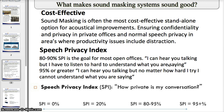Sound masking is often the most effective stand-alone option for acoustical improvements. If you already have drop ceilings and cubicle partitions and are still having speech privacy issues, sound masking is the cost-effective way to definitely increase your speech privacy to a level of confidentiality. The Speech Privacy Index is what acousticians at Haverford Systems use to judge how well your conversations are being masked.